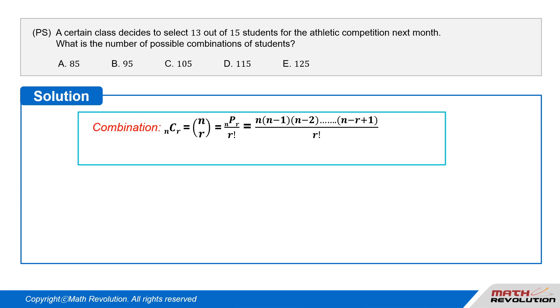n choose r equals nPr over r factorial, which is equal to n times n minus 1 times n minus 2 and so on till n minus r plus 1 over r factorial.